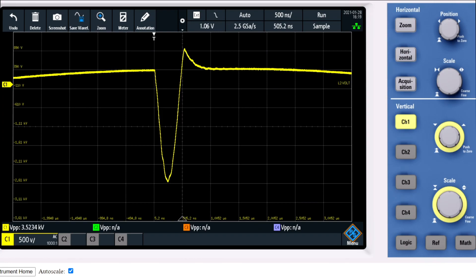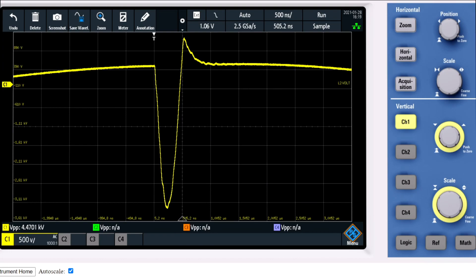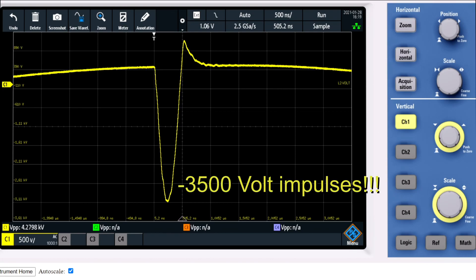Oh my god, this is the top. So I can give it one, two, three, four, five, six, seven times 500 volts is three and a half thousand volt impulses. Okay, I'm gonna switch it off.